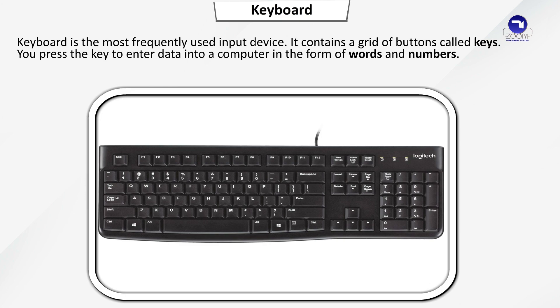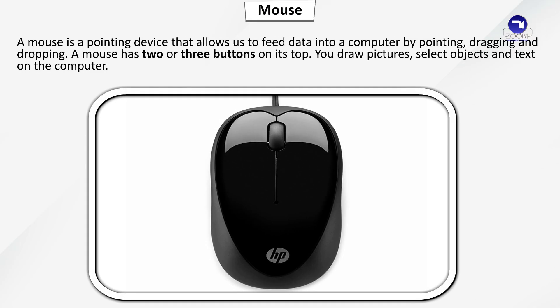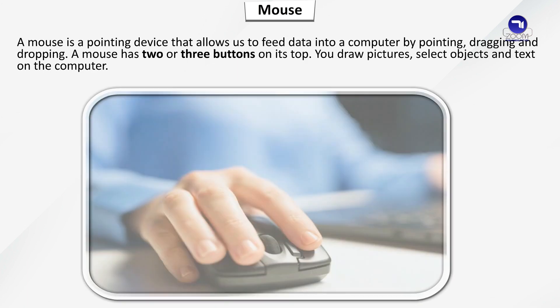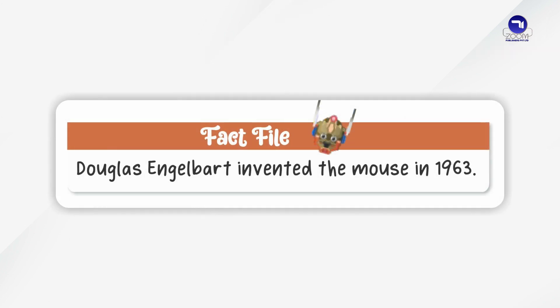You press the key to enter data into a computer in the form of words and numbers. A mouse is a pointing device that allows us to feed data into a computer by pointing, dragging and dropping. A mouse has two or three buttons on its top. You draw pictures, select objects and text on the computer. Fact File: Douglas Engelbart invented the mouse in 1963.